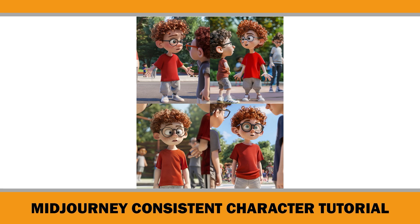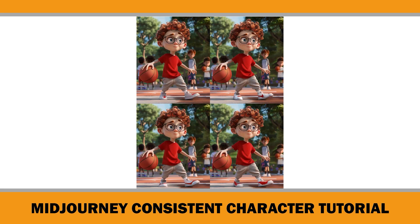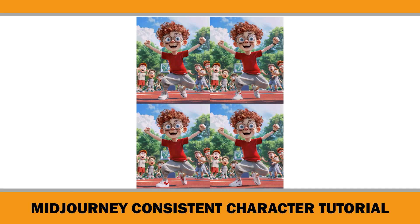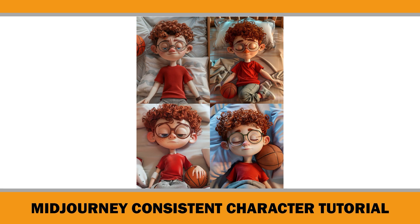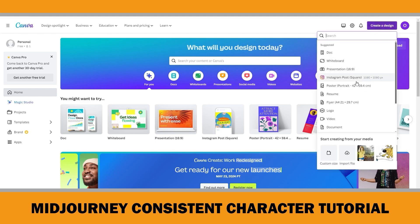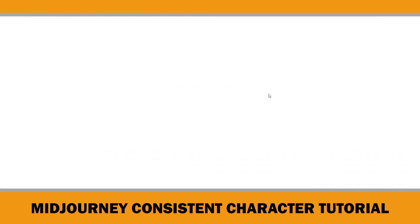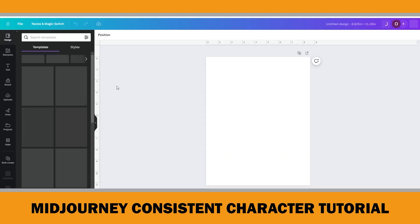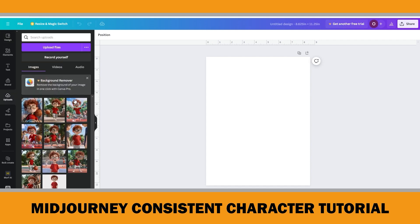In this manner, I generated images for all the pages based on the outline provided by ChatGPT. The next step involved creating the interior pages of the children's storybook using these images in Canva. I opened a document with a page size of 8.625 by 11.25 inches, which includes bleed margins for an 8.5 by 11 size. Then I uploaded all the images generated in Midjourney for this story.